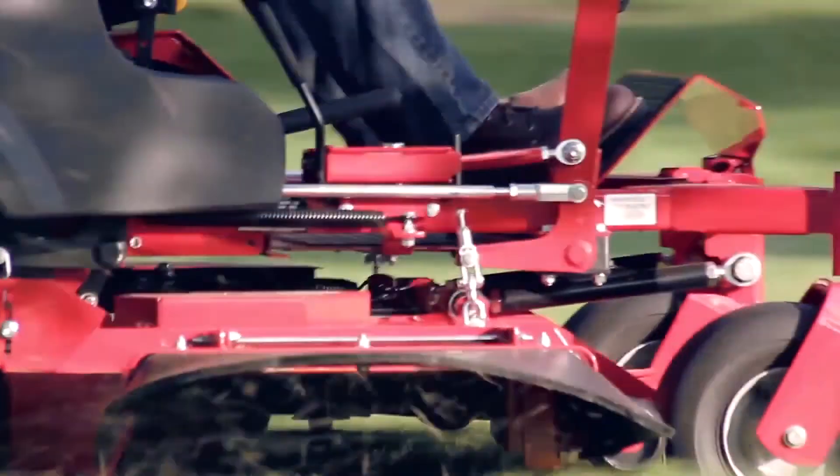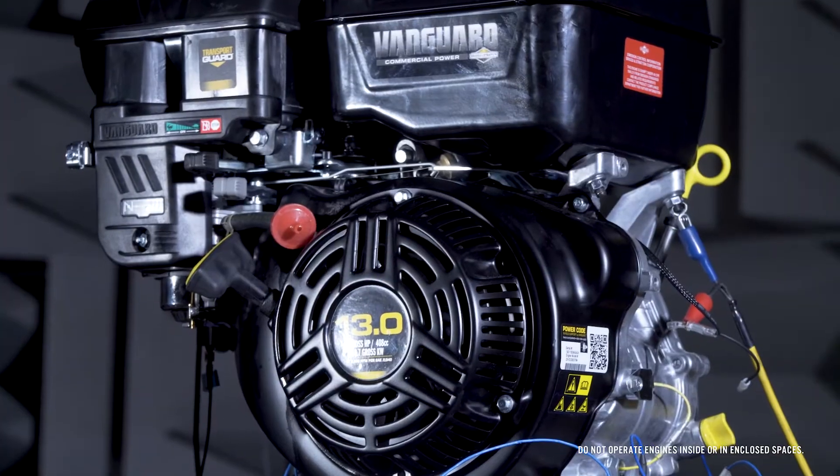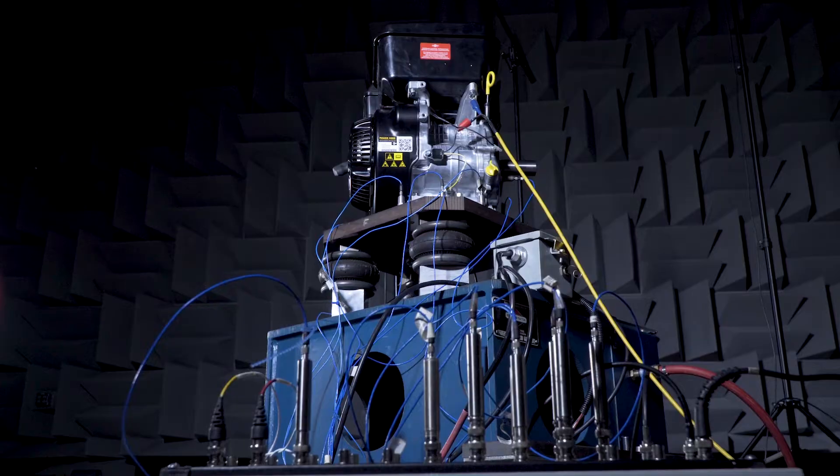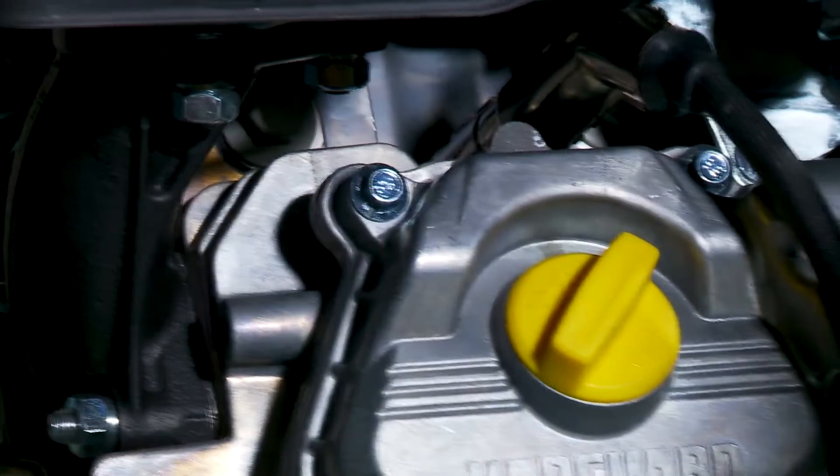To measure pure engine vibration, NVH lab engineers use a tailor-made stand with air spring insulation. A shaker table is used to determine the impact of an application's vibration on the Vanguard engine.